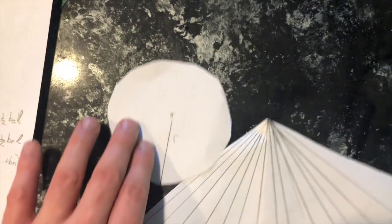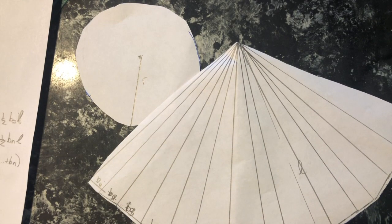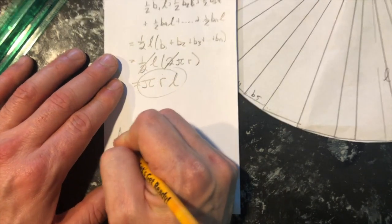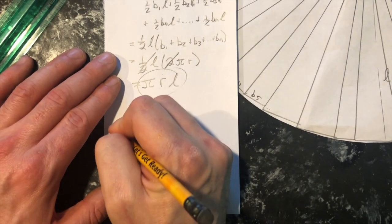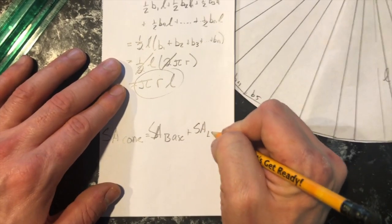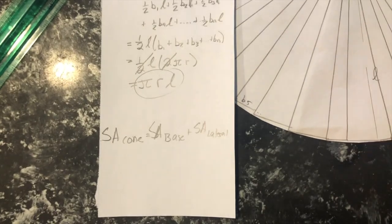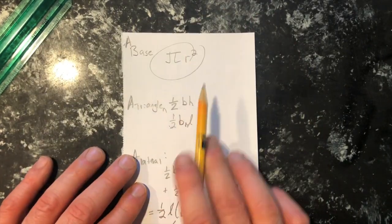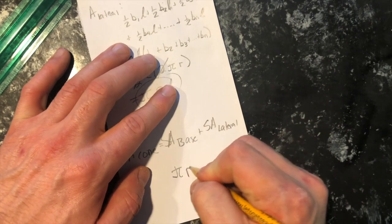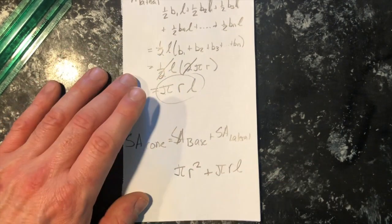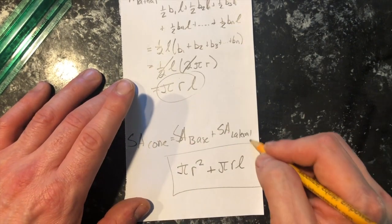To get the total surface area, I take those individual areas and bring them together because the whole is the sum of its parts. The surface area of a cone equals the surface area of the base plus the surface area of the lateral sides: SA = πr² + πrL.